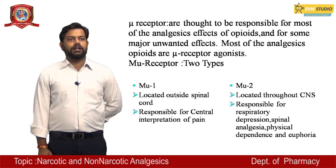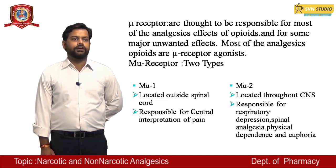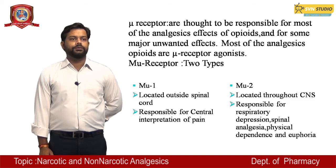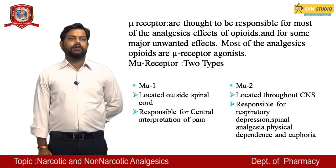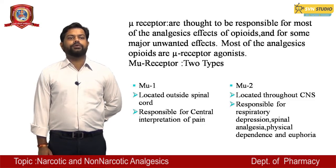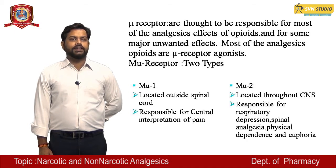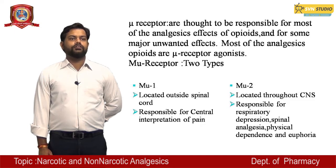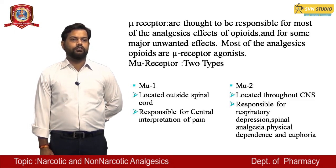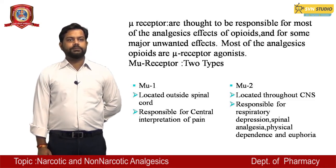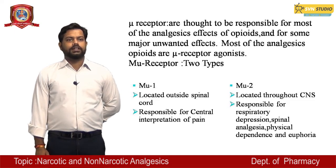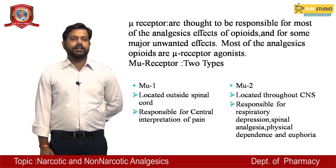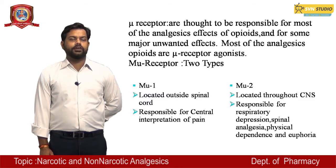MU receptors are of two types: MU receptor 1 (M1) and MU receptor 2 (M2). M1 receptors are located outside the spinal cord, while M2 receptors are located throughout the CNS. MU receptor 1 is responsible for central interpretation of pain. M2 receptors are responsible for respiratory depression, spinal analgesia, physical dependence, and euphoria.